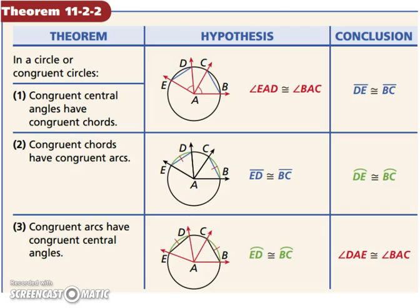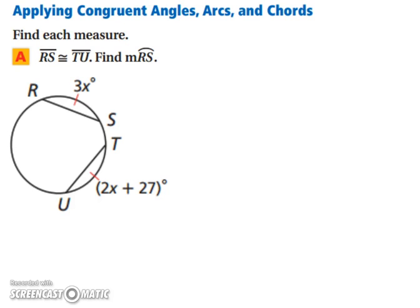Let's look at an example. Find each measure. RS is congruent to TU. What's the measure of arc RS? Well, if we know that RS and TU are congruent, then that means our arcs are congruent. So set each piece equal to each other. So we have 3X equals 2X plus 27. Solve for X. So we want to get X to the same side of the equation. So therefore, subtract 2X from both sides. So we have X equals 27.